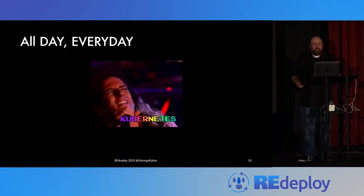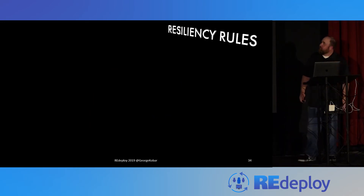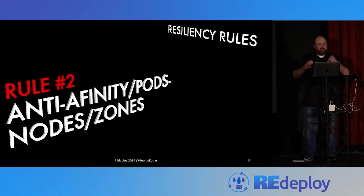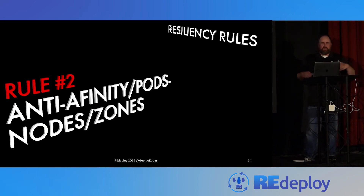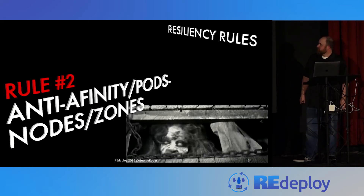Every day all day on Twitter it's all about Kubernetes — even Michael Bolton's singing about Kubernetes, I had to throw that in. Resiliency rule two: use anti-affinity rules, pods, nodes, or different zones to distribute your application across multiple failure points. It might seem obvious, but you still have to illustrate these things to people who may not have the experience. And if that wasn't helpful, here's another zombie picture.